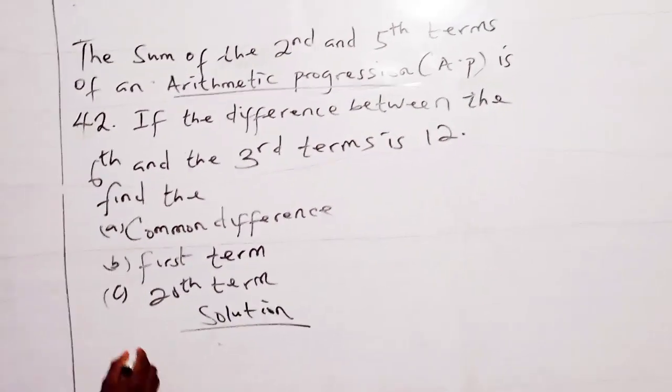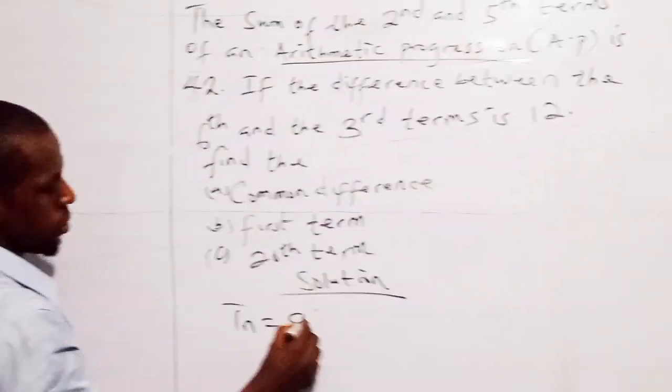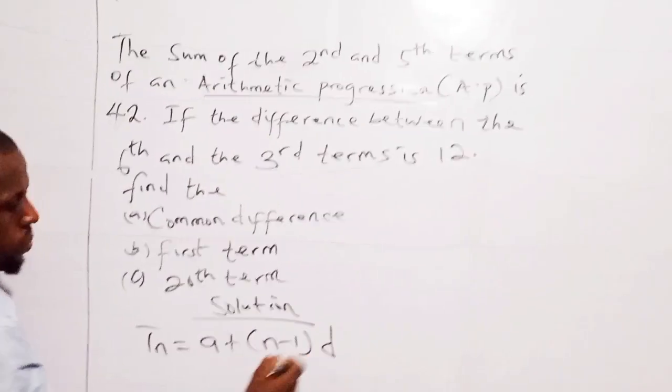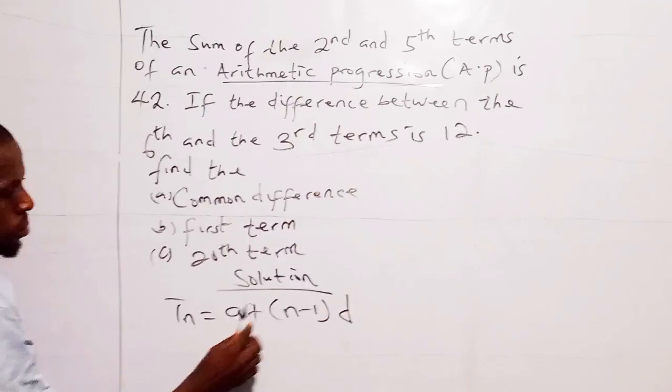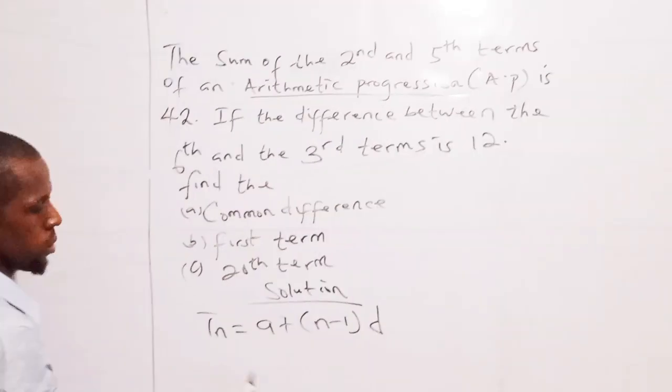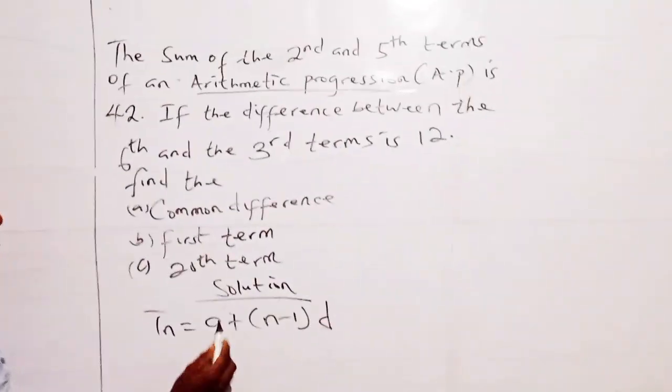A stands for the first term, D stands for the common difference between the numbers or sequence of numbers. What is the term by first term? Let's see, we are having 1, 2, 4, 8. The first term here is 8.